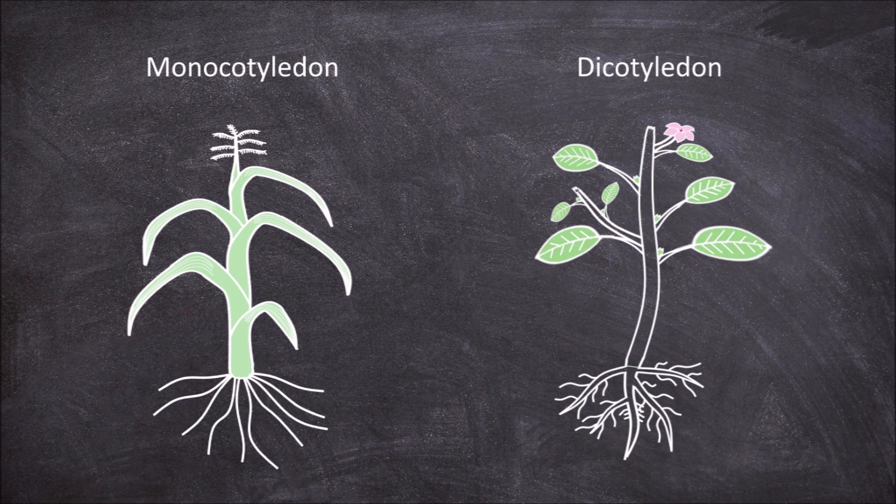The second feature can be observed in the roots of each group. In monocots, the roots have an adventitious root system — the roots are fibrous with no central taproot.